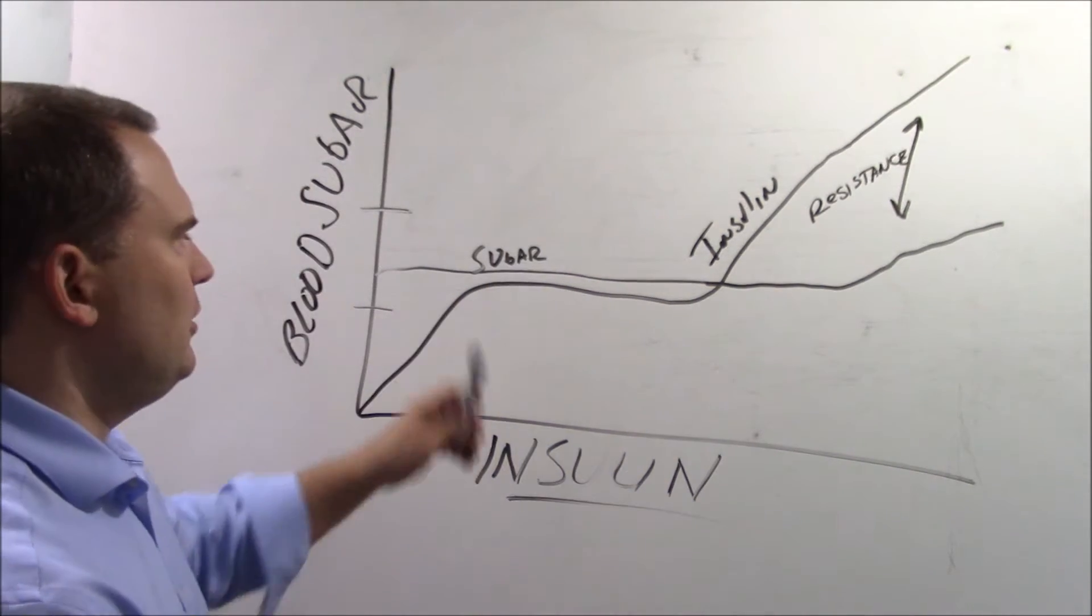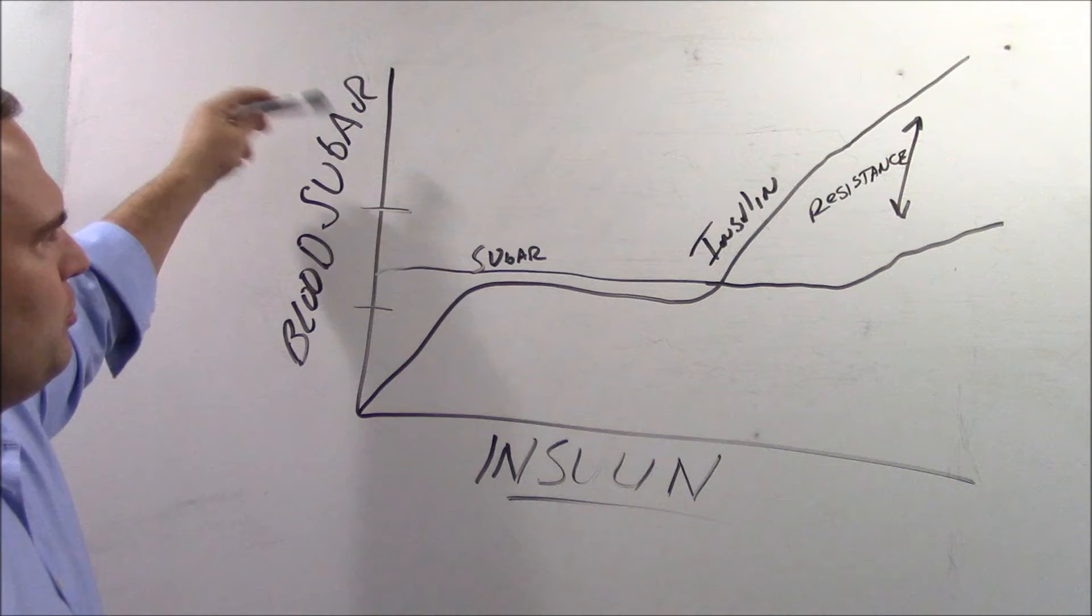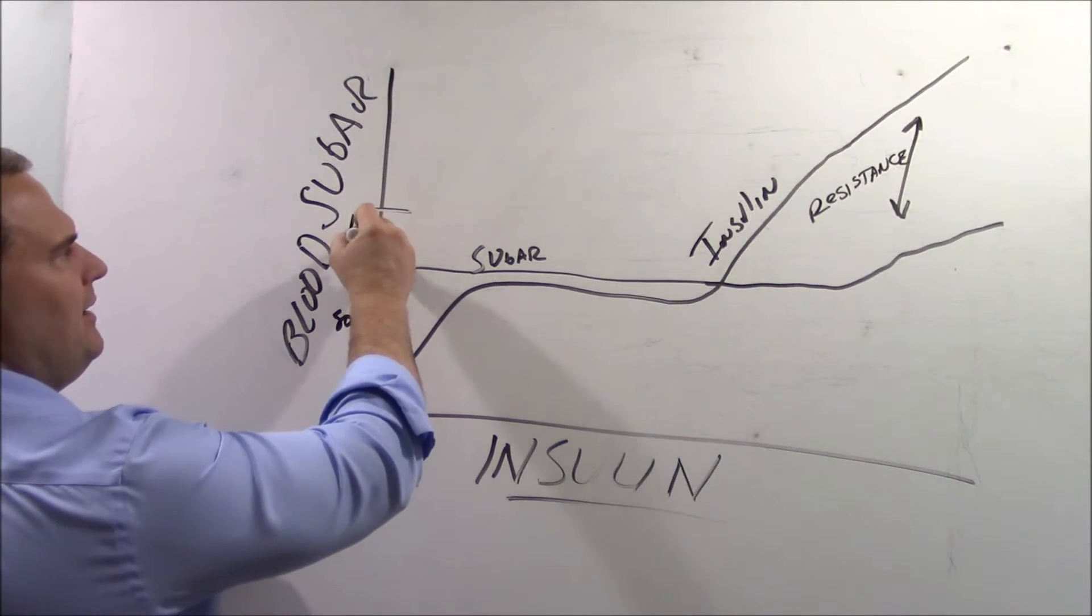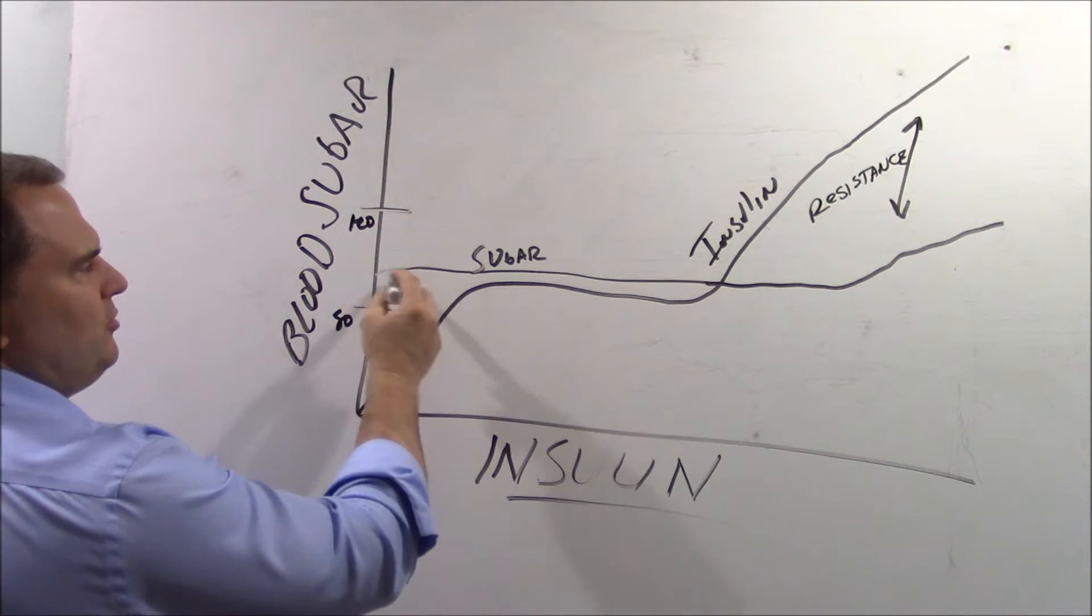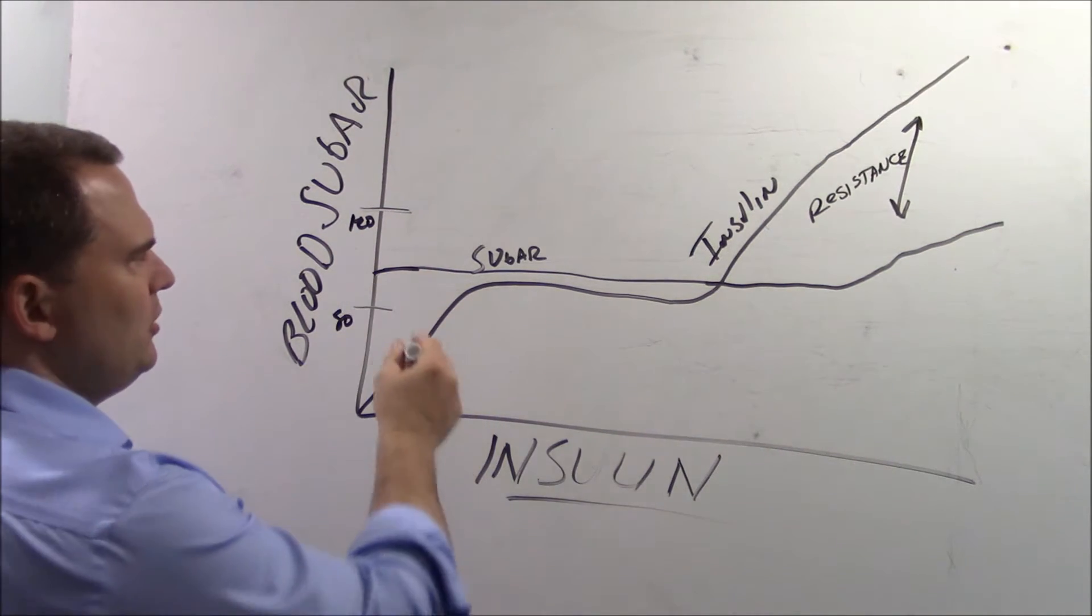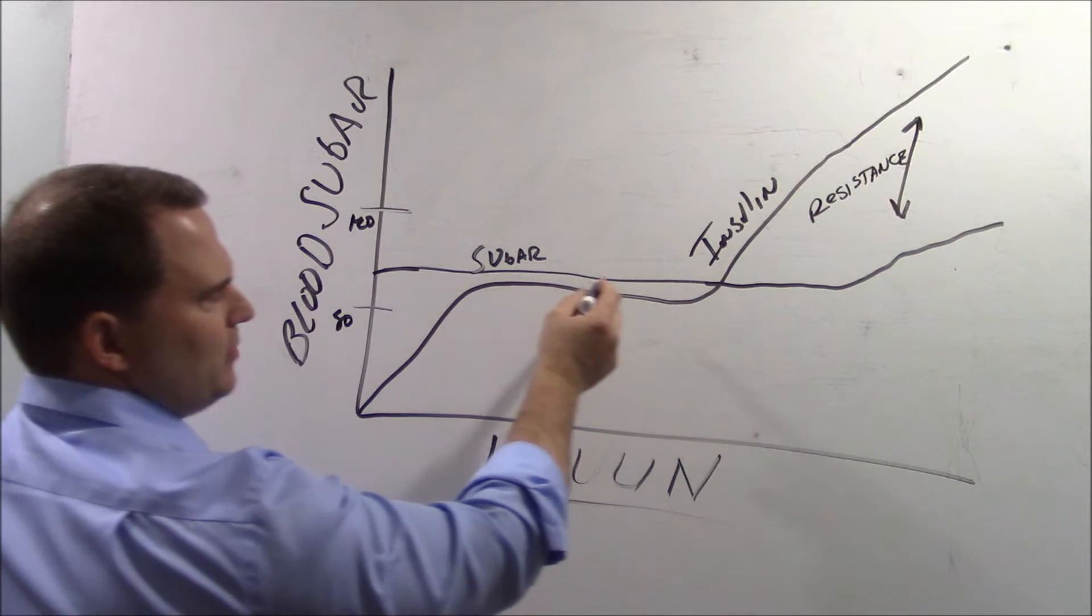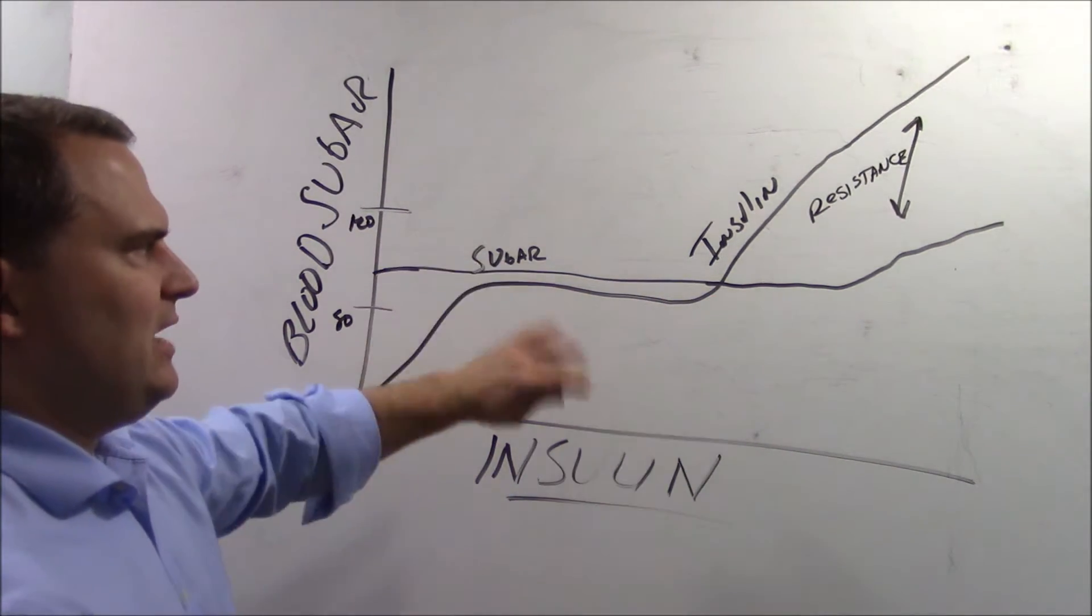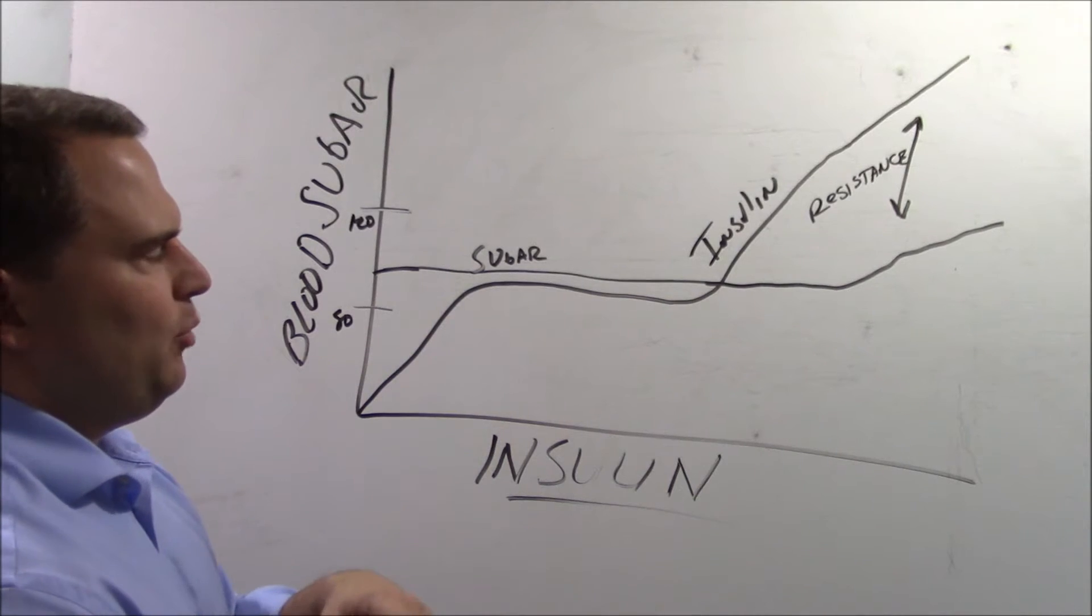So if we look here, this is your blood sugar and here's your range on the low end, maybe 80 and high end 120. And so let's just call this a fasting sugar. So if your fasting sugar is remaining here for years and there's no major changes, it may not be that important.